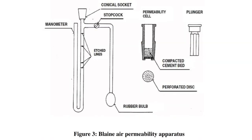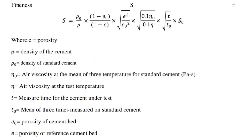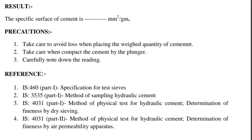Figure 3 shows the Blaine air permeability apparatus. Precautions: First, take care to avoid loss when placing the weighed quantity of cement. Second, take care when compacting the cement with the plunger. Third, carefully note down the readings.